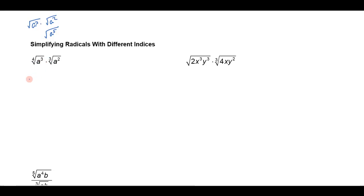I'm going to rewrite this as a to the three-fourths power. Remember that the root is the denominator when you write it as a fractional exponent, and the power is the numerator. So I get a to the three-fourths times a to the two-thirds.